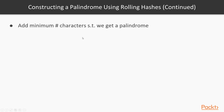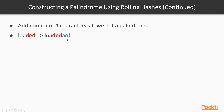We want to add a minimum number of characters at the end of a string such that we end up with a palindrome. That is, if we are given the string 'loaded', we want to end up with the string 'loadedAOL', which is a palindrome. So we have added a minimum of 3 characters — we can't do it with any less.